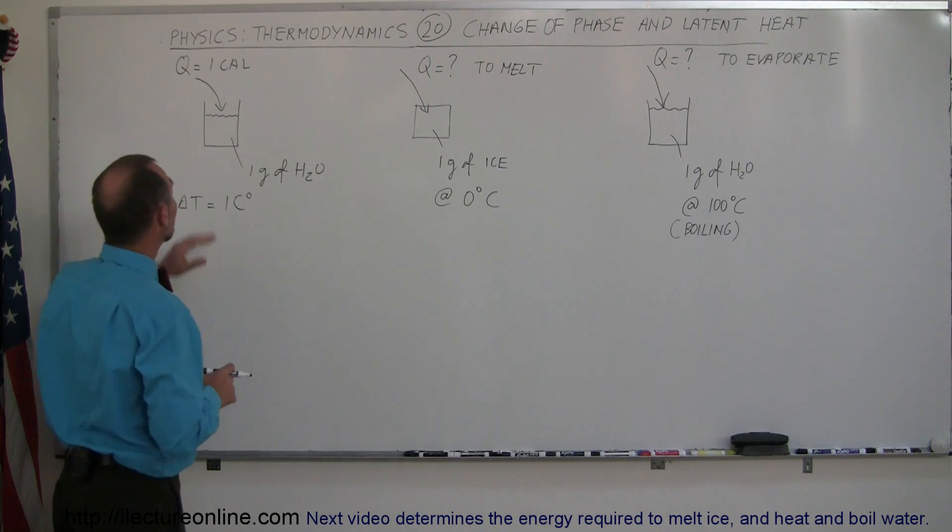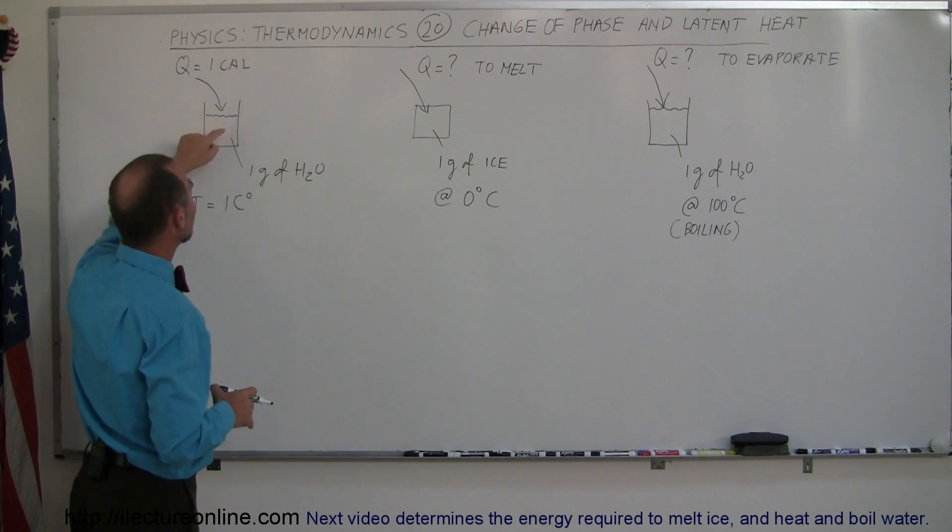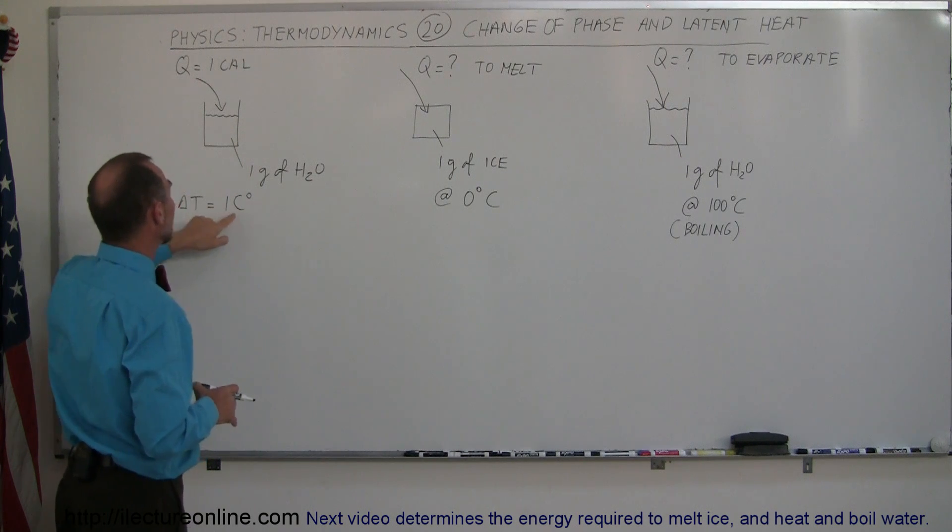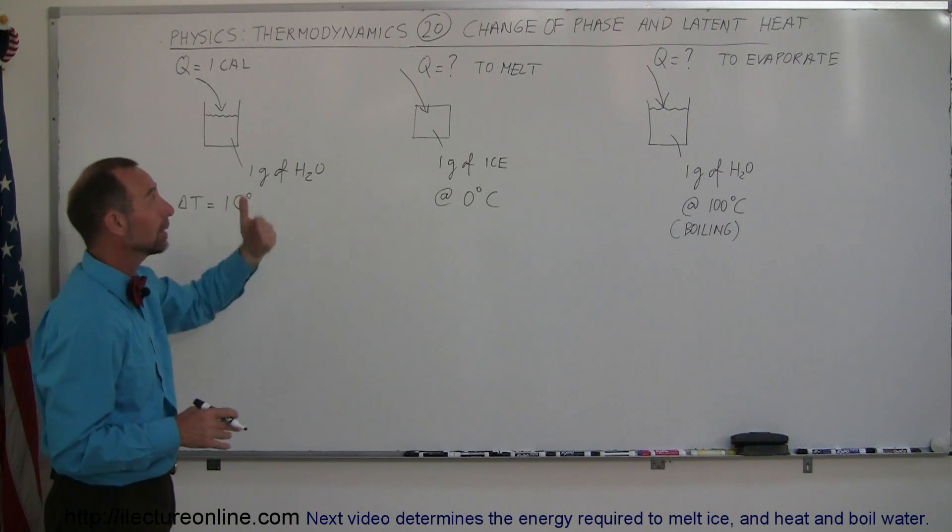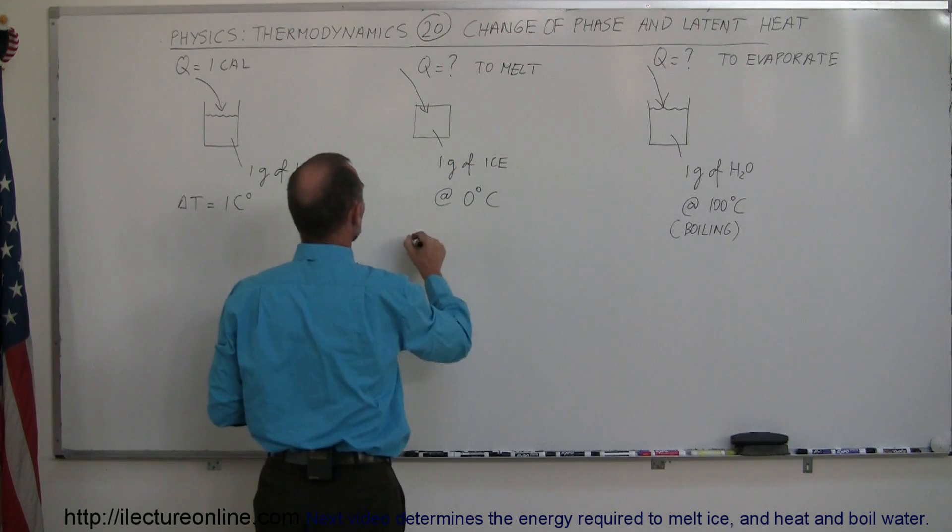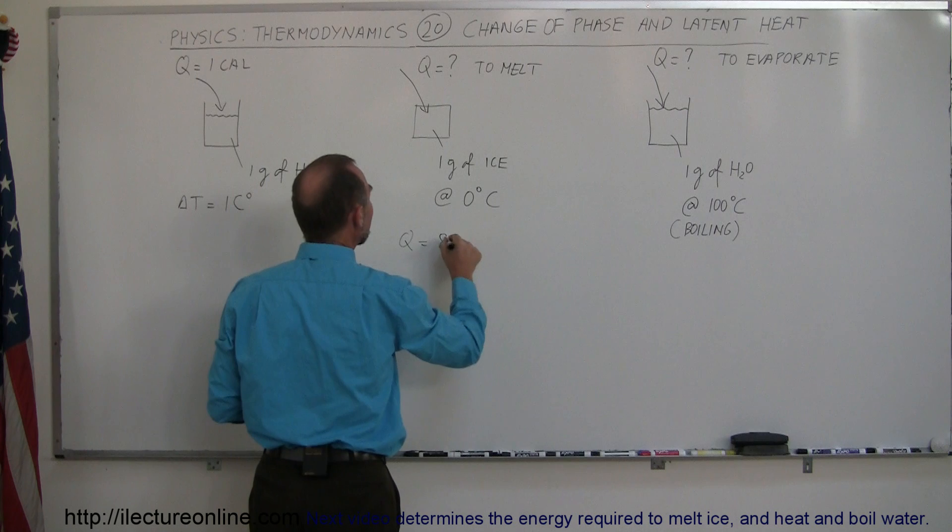It only takes one calorie to take one gram of water and increase it by one centigrade degree. But to take one gram of ice at zero degrees centigrade and completely melt it, the heat required Q is equal to 80 calories.